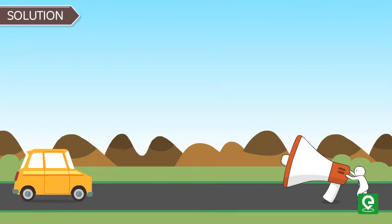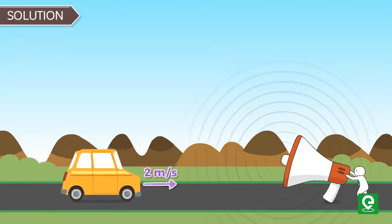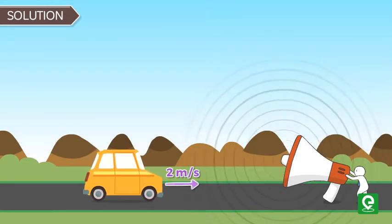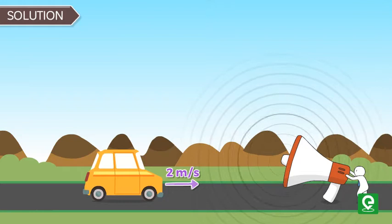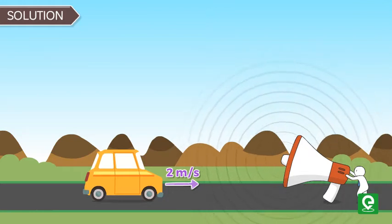Solution: In this question, we are given a car which is moving towards a stationary source with a velocity of 2 m/s. This source is emitting a sound of frequency f₀ = 492 Hz. From Doppler's effect,